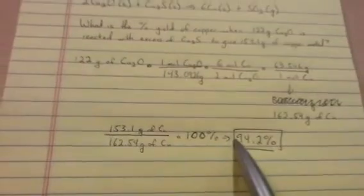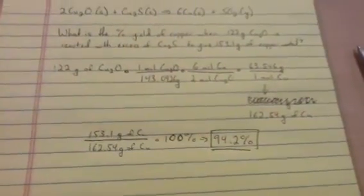And we need to find out what percentage of 162.54 grams that this is. So what I'll do is I'll divide. I'll divide 153.1. I'll divide the part by the whole. And I'll multiply that by 100%. And I'll find out that 153.1 grams of copper is, in fact, 94.2% of the theoretical yield. Thank you very much.